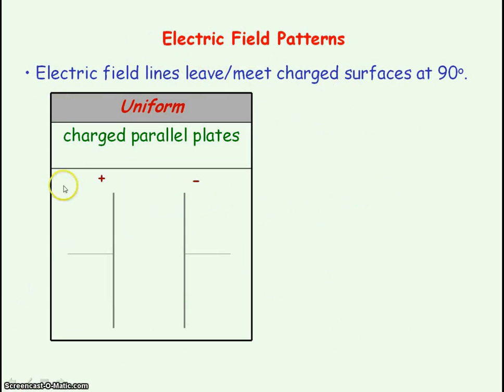If we first consider the electric field pattern inside charged parallel plates, we've got one plate which is positively charged and one plate which is negatively charged. The electric field lines are going to move from positive to negative.